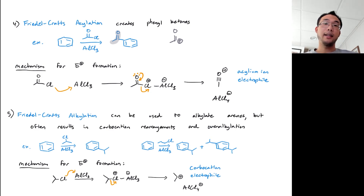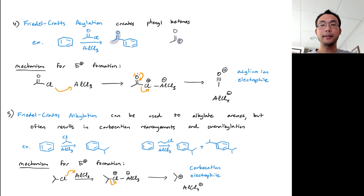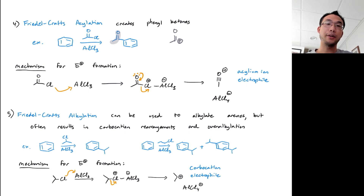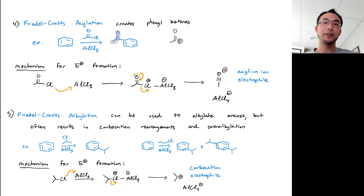That was a look at the electrophile side of EAS reactions, covering five different types of reactions in which five different groups are added to a benzene ring. In the next EAS video, we will look at how the structure of the nucleophile affects how the EAS reaction takes place, and we'll also expand into non-benzene aromatic molecules.